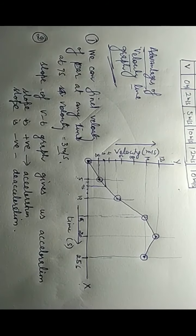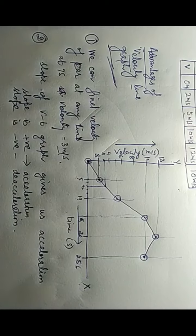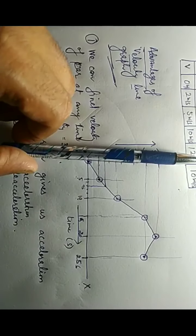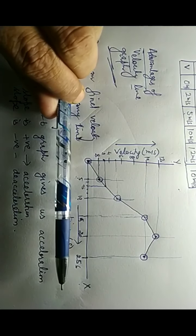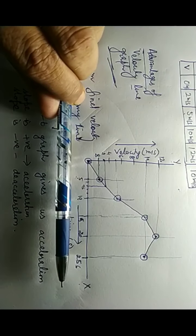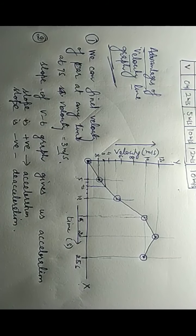Slope is the slantness of a graph. The slope is maximum when the line is vertical, and zero when the line is horizontal. By looking at the slantness of the velocity-time graph, I can immediately tell where the acceleration is maximum and where it is minimum.